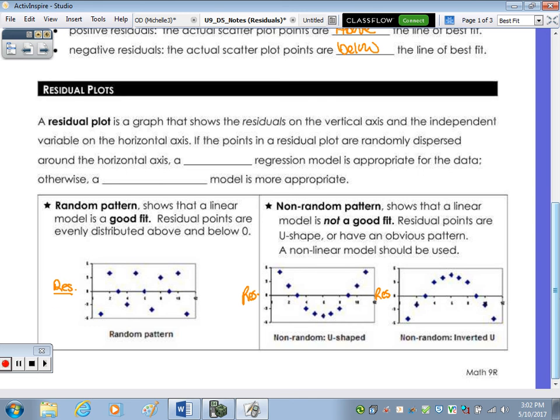Down below, if the points in a residual plot are randomly dispersed, here's the random pattern, around the horizontal axis, which is your X axis, then we have a linear regression. If it's not randomly dispersed, so you see a pattern like you see over here, this represents a U-shaped curve. That's a non-linear model, which we'll look at more next class. So a random pattern shows a linear model is a good fit. They're evenly distributed above and below the X axis.